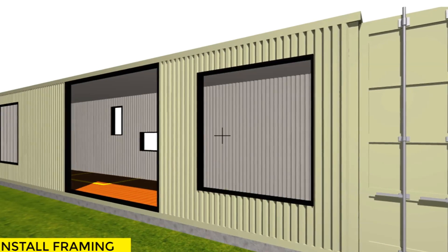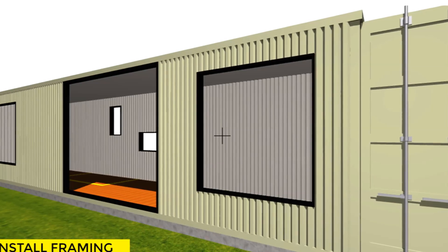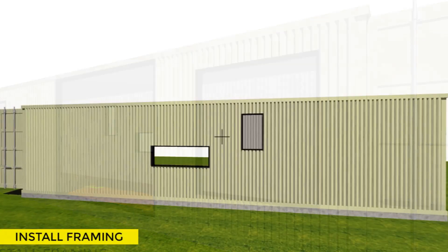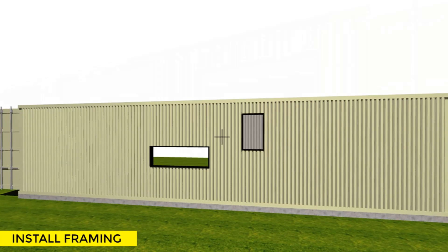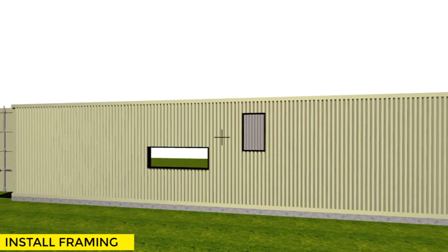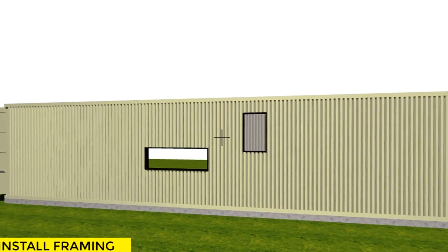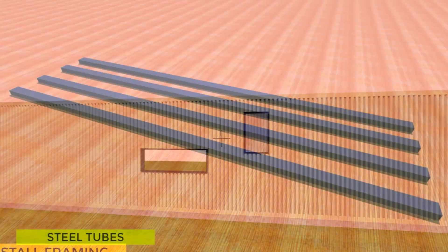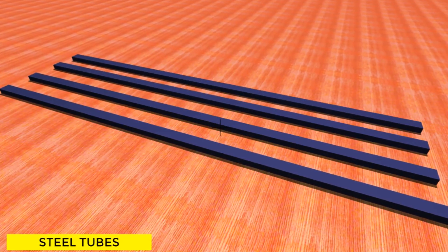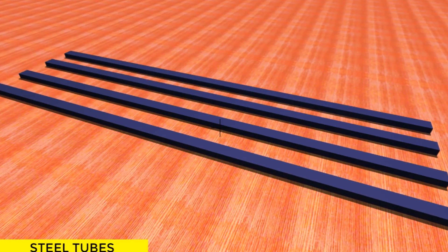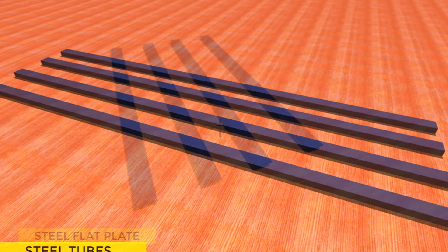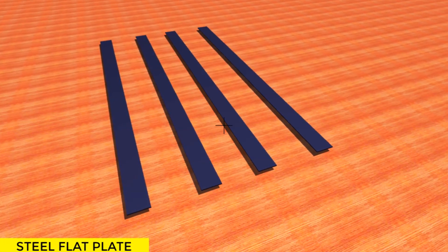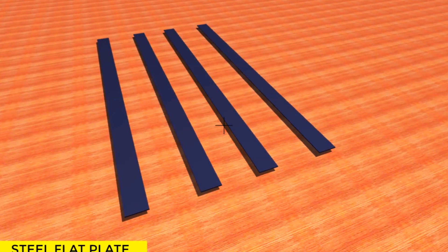Step 3: fabricate the steel frames. It is important to add structural reinforcement to offset the removed steel. The container walls are quite thin, and therefore fixing a wooden frame or an aluminum-framed window directly into the cut opening is almost impossible. It is therefore advisable to weld a steel frame or a heavy-gauge steel flat plate around the openings to hold and fix the windows.